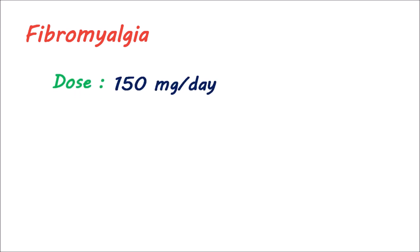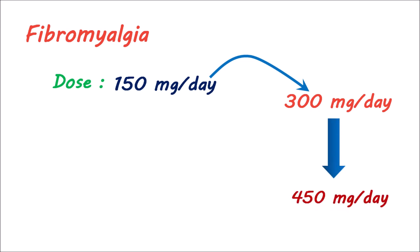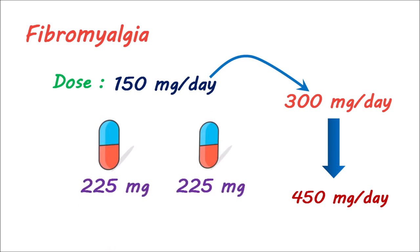For the management of fibromyalgia, the dose of pregabalin starts at 150 mg per day. The dose can be further increased to 300 mg daily within one week of treatment if sufficient pain reduction is not observed. Further dose increments can be done up to 450 mg per day, where pregabalin is given at 225 mg twice daily.